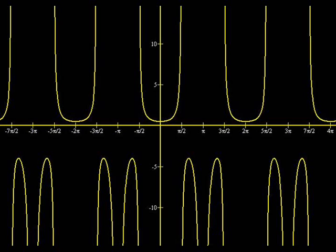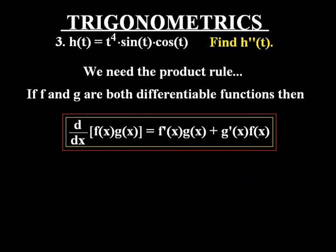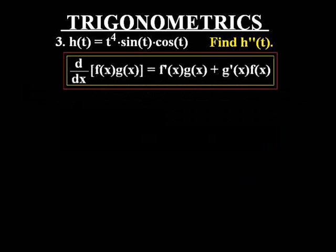All right, let's move on to question number three. Question number three asks us to find the second derivative of the equation h of t equal to t to the power 4 multiplied by sine t multiplied by cos of t. So we're going to need the product rule in order to do this, and the product rule is stated here, if you did not recall it.